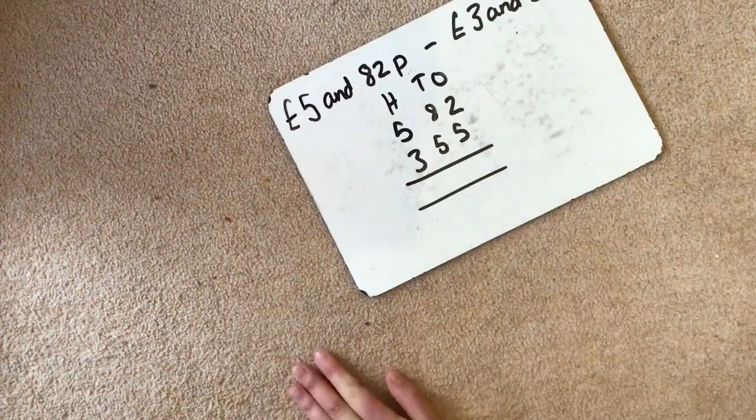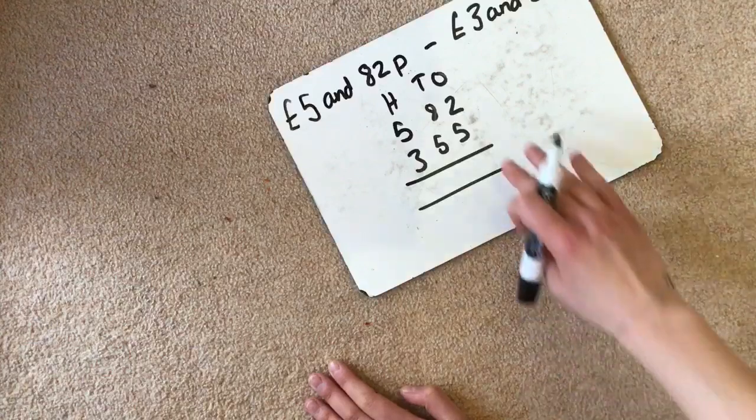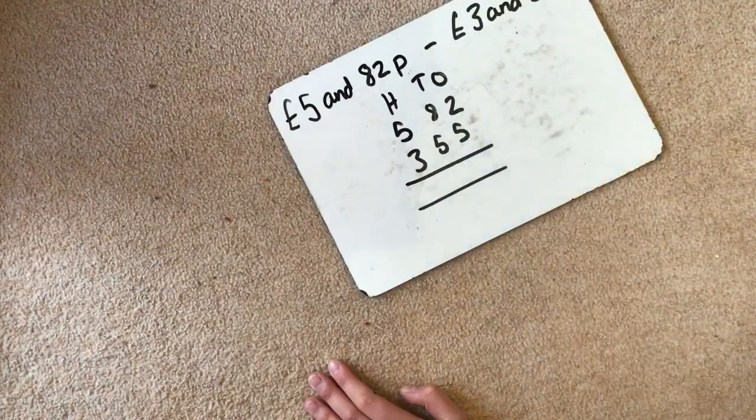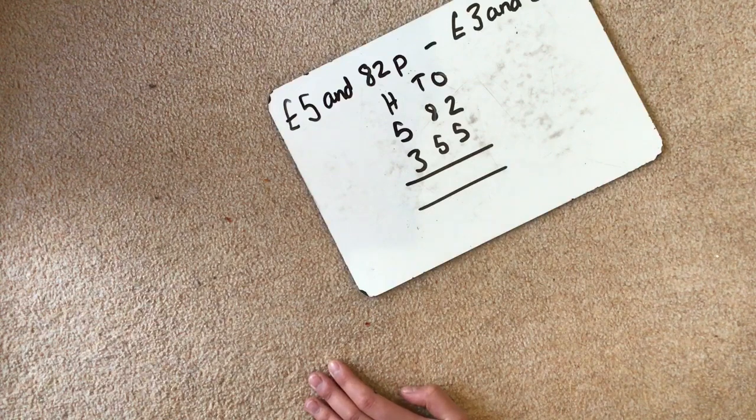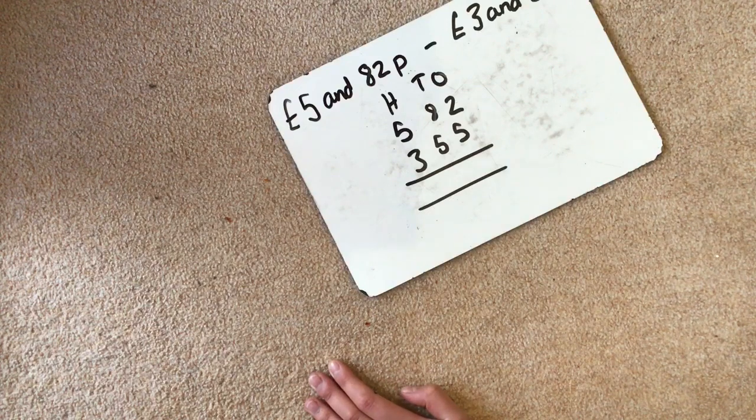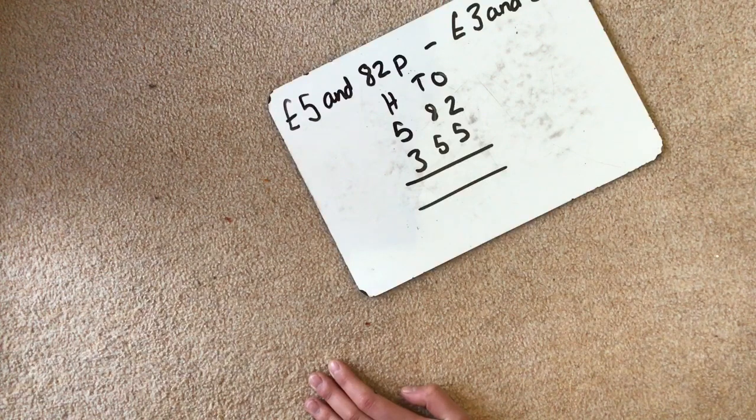So we are going to look at 2 and 5. Now can we take 5 away from 2? If we had 2 apples, can we take 5 away from them? No, we can't because we don't have enough. So this is where we regroup.